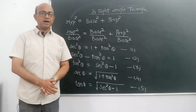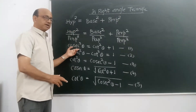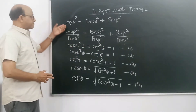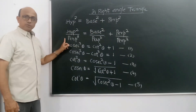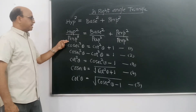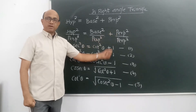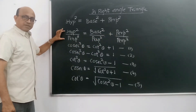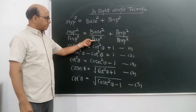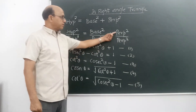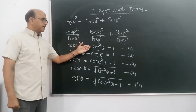Ab do remaining reh gaye: cosec theta aur cot theta. Now we come to the third relationship between cosec theta and cot theta. Ab ki baar hypotenuse square is equal to base square plus perpendicular square ko hum perpendicular se divide kar lete hain. To hypotenuse square upon perpendicular square is equal to base square upon perpendicular square plus perpendicular square upon perpendicular square. Hypotenuse upon perpendicular cosec hota hai, to cosec square theta aa gaya. Base upon perpendicular cot hota hai, to cot square theta, aur dono cancel hokar plus 1. We get: cosec square theta is equal to cot square theta plus 1.